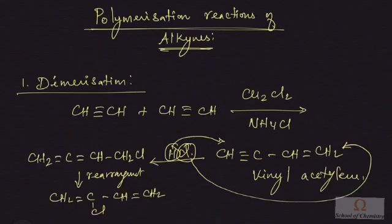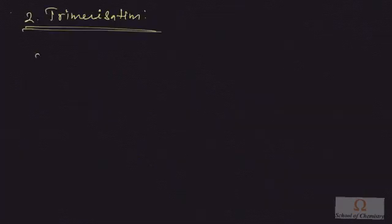So this is the final product you will be getting. The name of this product is chloroprene. Chloroprene is a useful compound to synthesize synthetic rubber neoprene.